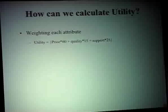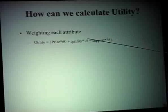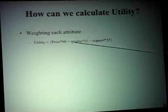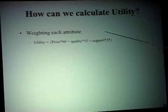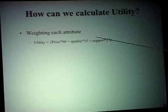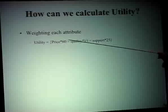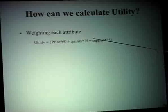How can we calculate utility in this case? The simplest way is to have a weighting for each of the attributes and then calculate utility by taking into account these coefficients. We say that price is most important, quality is important, but support is more important than quality. How we decide about these numbers is up to us — it's your personal preference. When you want to consider what is the utility of a state you'd like to reach, you calculate it by taking weighted attributes.